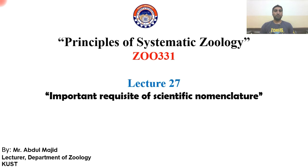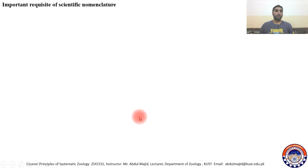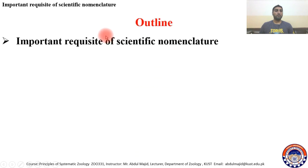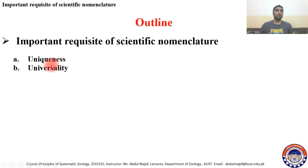Welcome to lecture 27. Today's topic is about important requisites of scientific nomenclature. We will talk about three important requisites of scientific nomenclature: uniqueness, universality, and stability.